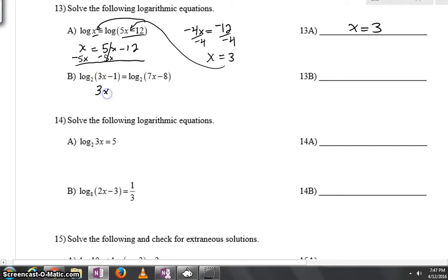Let's do the same thing here. Set the insides equal. We have a base 2 log on both sides. So I have 3x minus 1 equals 7x minus 8. Minus a 3x on both sides. We will have negative 1 equals 4x minus 8. I will add an 8 to both sides. Negative 1 plus 8 is 7 and we will have 7 is equal to 4x. Real quickly we can divide by 4 and we will have x is equal to 7 fourths.